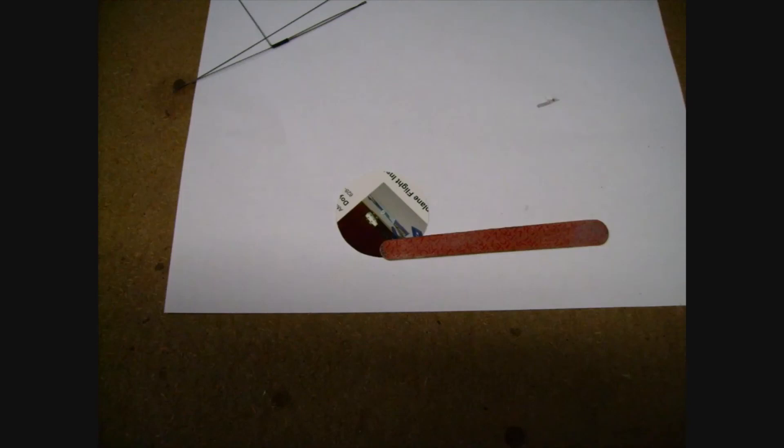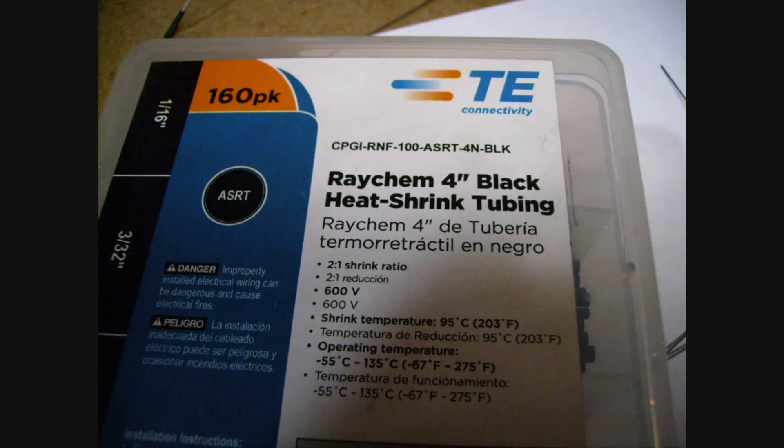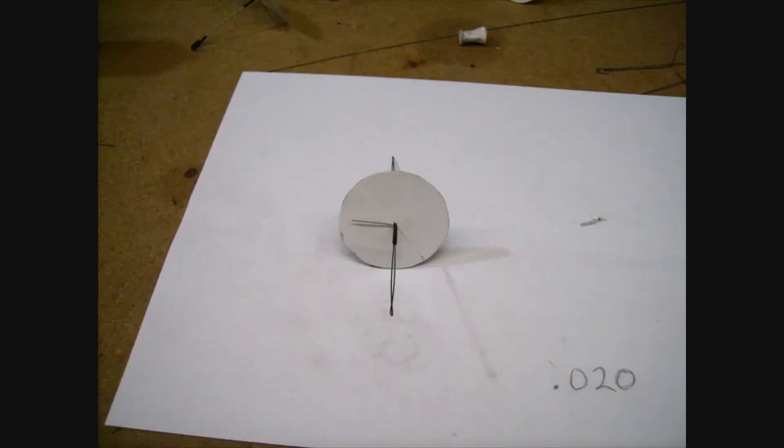Now sand the business card. If you have a high gloss business card, you will need to sand it so the glue will stick. Now I use heat shrink also for the other side but I cut a slot in the business card to slide it on and glue the two halves together.